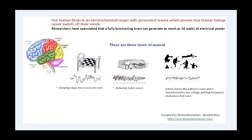Brain waves are generated by the building blocks of your brain. The individual cells called neurons communicate with each other by electrical changes. We can actually see these electrical changes in the form of brain waves as shown on the electroencephalogram or EEG test. Brain waves are measured in cycles per second, or hertz.